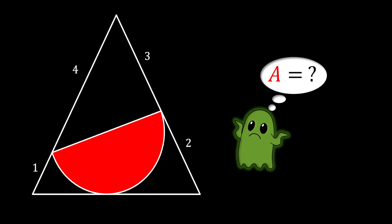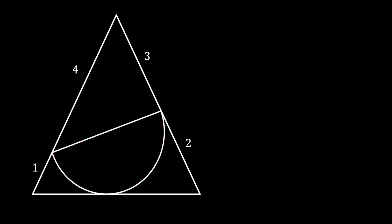If you want to try this interesting problem for yourself, you can pause the video right now and then come back and check the solution. So let's solve this one. We're going to start by labeling the vertices of our triangle as A, B, and C, then we will label the center of our half circle as O, and we will label the intersection point between this half circle and the left and right side of the triangle as D and E.